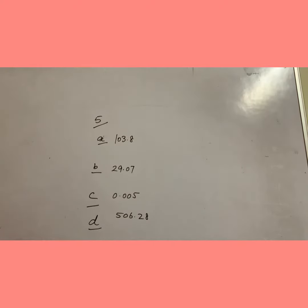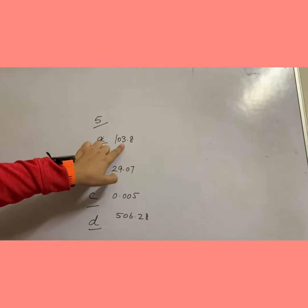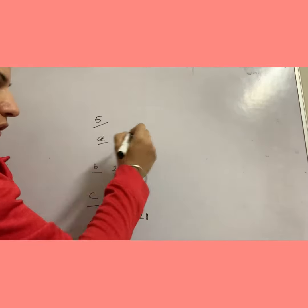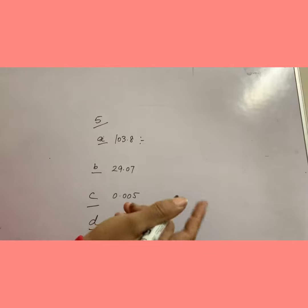Yes dear students, now question number five: write the following decimals in words. So this is 103.8. Here we have two methods to write this into words, so I am just writing in both methods. It's up to you what is comfortable for you.